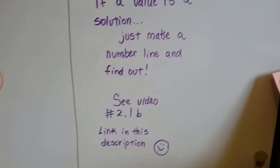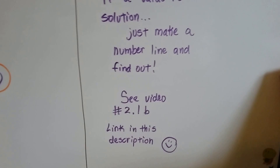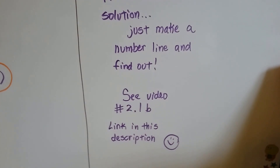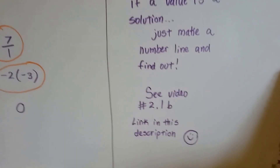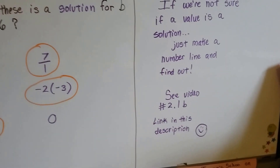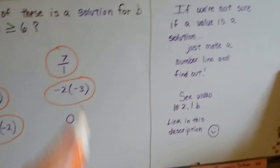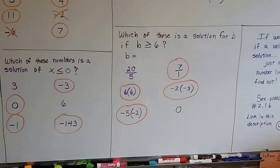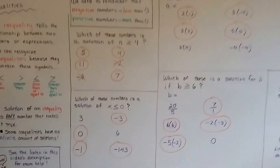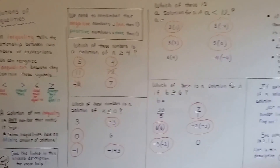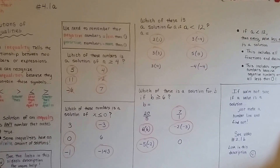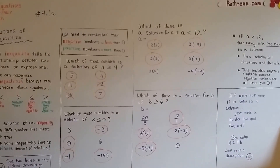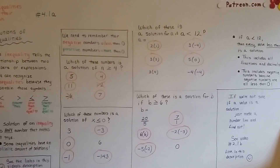You can see video number 2.1b from the beginning of this playlist for Algebra 1 — there's a link in the description that covers making number lines and determining which values are greater than, less than, or equal to each other. We're going to move on to 4.1b, where we'll talk about graphing these inequalities. I hope to see you there.